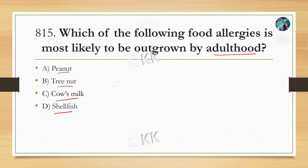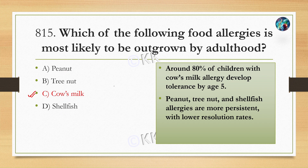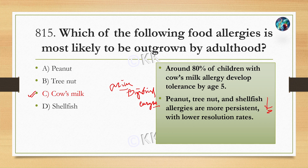The correct option is cow's milk. Babies have a milk-digesting enzyme, but in adulthood this can decline, particularly in Asian adults. Around 80% of children who have milk allergy outgrow it by around 5 years of age. Peanut, tree nut, and shellfish allergies are more persistent with lower resolution rates and are generally rare to outgrow.